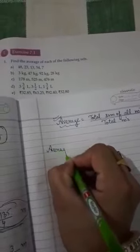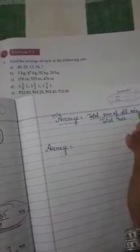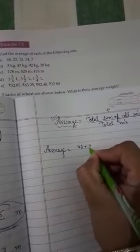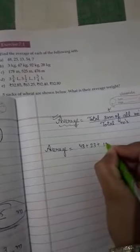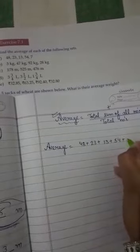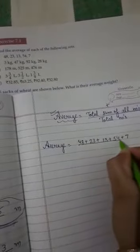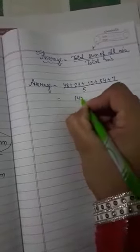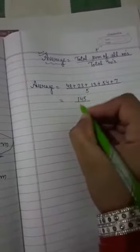We want to find the average. Average equals sum of all numbers. Sum means add. Add 48 plus 23 plus 13 plus 54 plus 7. Total numbers: 1, 2, 3, 4, 5. Then divide by 5. When you add all numbers, the answer is 145. Then divide by 5.